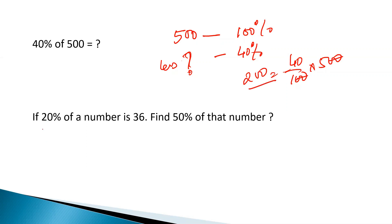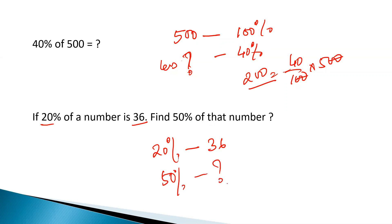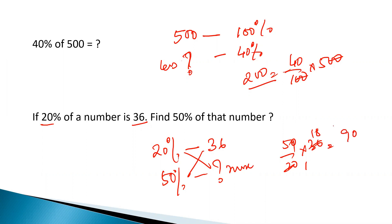In another example: if 20 percent of a number is 36, and 50 percent of that number is how much? This is again chain rule. We can see it will be more than 36. So the answer is 50 divided by 20 into 36, which gives 18 multiplied further — you get 90. This is how we apply chain rule in calculating percentage.